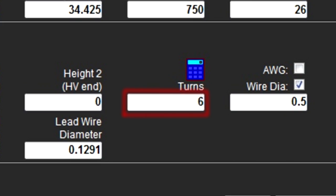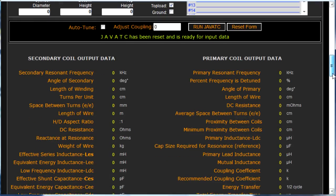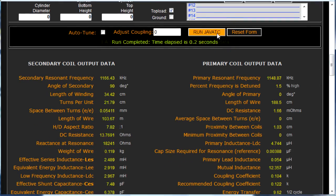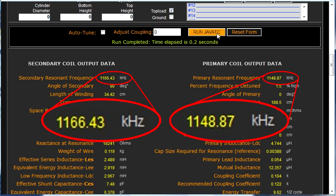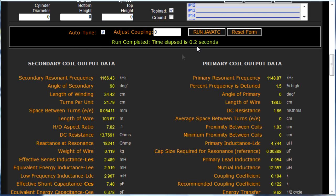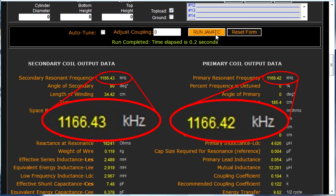I start out with 6 turns. When I click on the Run Java TC button, I get secondary and primary resonant frequencies that are very close together. And if I turn on auto-tune and do it again, the frequencies are right on.